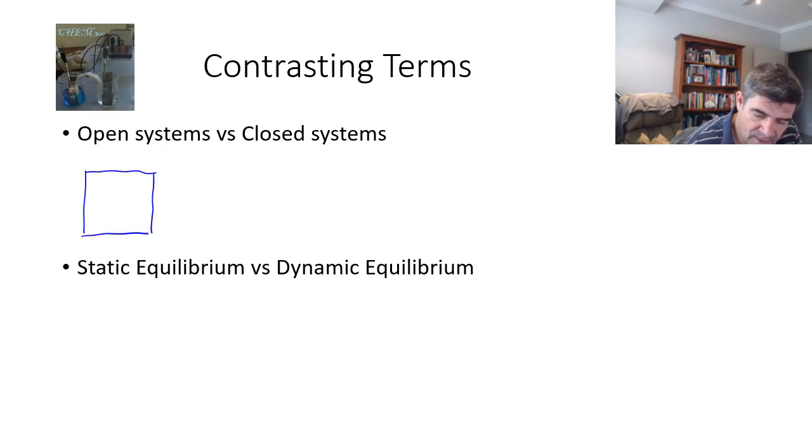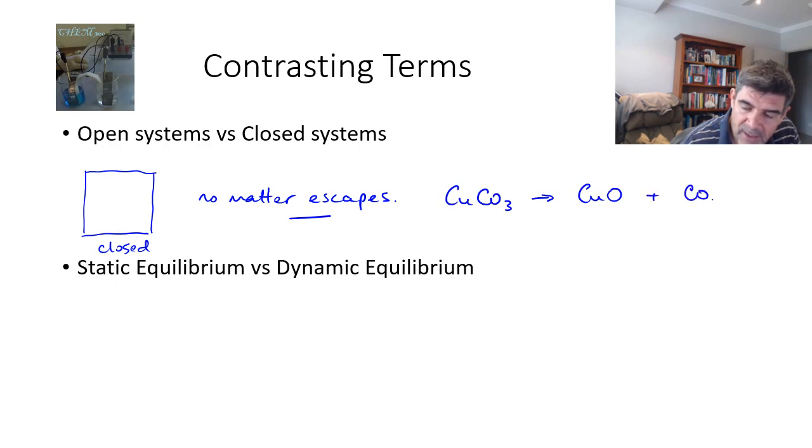We must ensure that our system is closed, and this means that no matter escapes. Obviously, if we were to decompose something like calcium carbonate (CaCO3) into calcium oxide (CaO) and carbon dioxide (CO2), the fact that this is a gas means that if the system is an open system, the gas will escape.